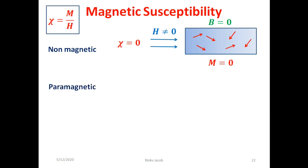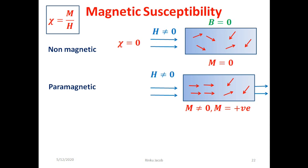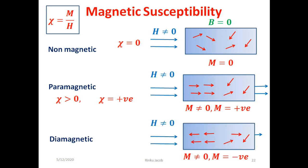For paramagnetic materials, when we apply magnetization field H, some of the dipoles align in the direction of the applied field, so there is a positive magnetization, and the magnetic susceptibility is greater than zero. For diamagnetic materials, the dipoles align opposite to the magnetizing field, so the magnetic susceptibility is less than zero, i.e., negative. In brief: for non-magnetic materials, magnetic susceptibility is zero; for paramagnetic materials it is positive; and for diamagnetic materials it is negative.